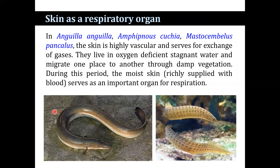Skin serves as an accessory respiratory organ. In Anguilla anguilla, Amphibnous cuchia, and Mastacembelus spankalus, the skin is highly vascular and serves for gaseous exchange. They live in oxygen-deficient stagnant water and migrate from one place to another through damp vegetation. During this period, the moist skin, which is richly supplied with blood, serves as an important organ for respiration.